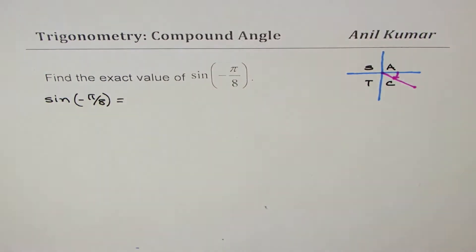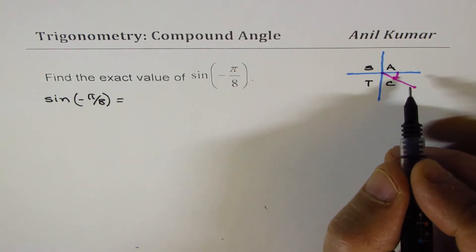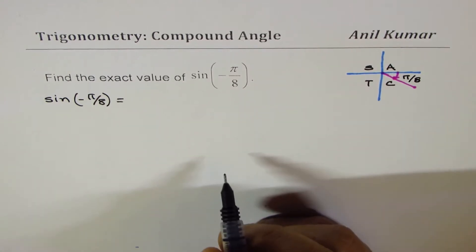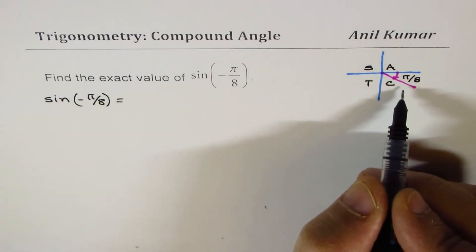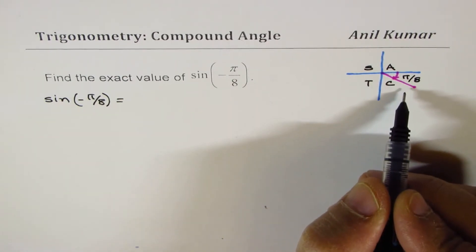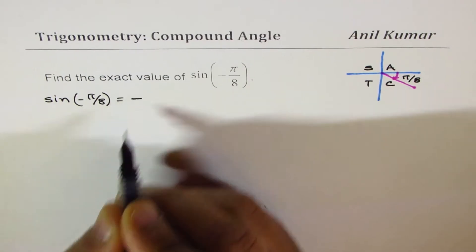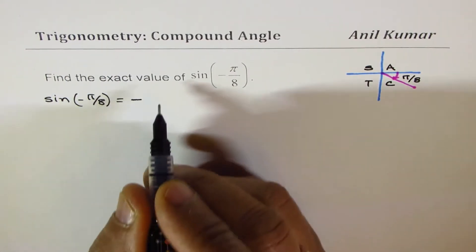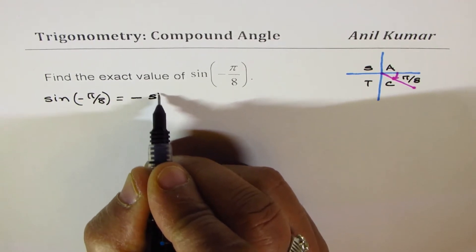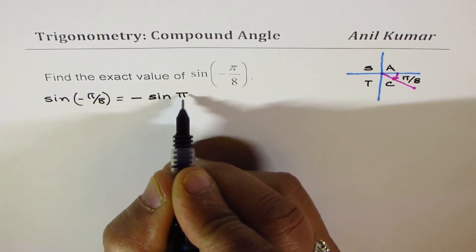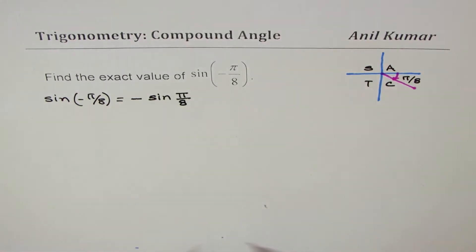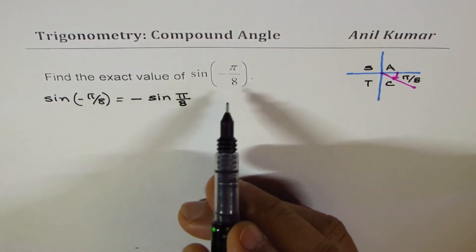In quadrant 4, only cosine is positive. The related acute angle is π/8. Since sine is negative in quadrant 4, we will expect a negative value, and the acute angle is π/8. Therefore we can write this as negative sine(π/8). That is the first step — always express what you want to find in terms of the related acute angle.